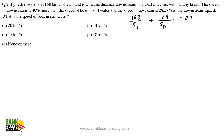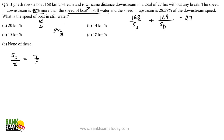The downstream speed is 40% more than the speed of the boat in still water. Let the speed of the boat in still water be x. Then sd/x = 7:5, because 40% of 5 = 2 units, making sd = 7 units.